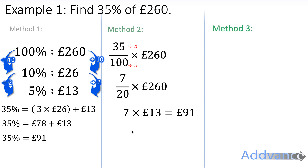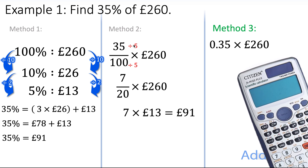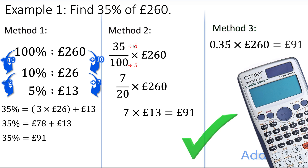Finally, the simplest method is if you have a calculator. We're just going to find 0.35 of 260 pounds, because 35% as a decimal is 0.35. If you're not sure how to convert from percentages to decimals, I have a video on that, but it's quite simple — you just put a decimal in the right place. So 0.35 times 260 is 91 pounds, and that is the final answer.